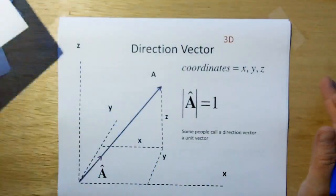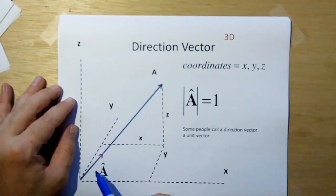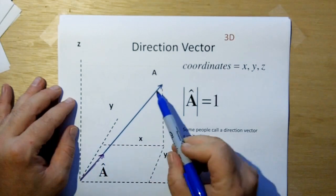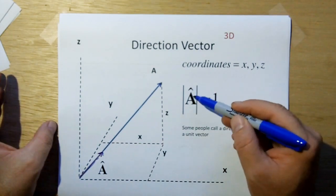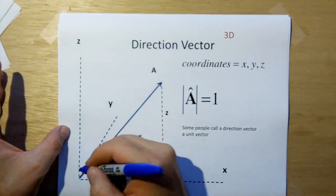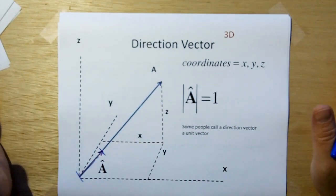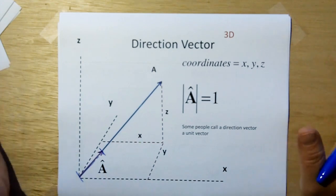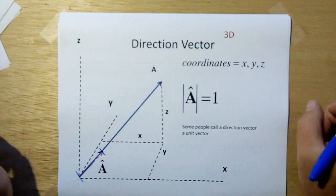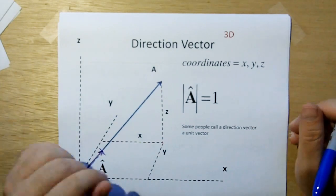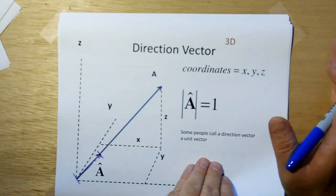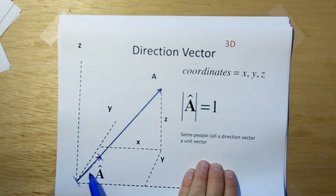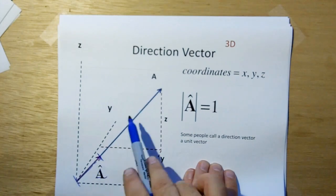Adding vectors in Cartesian coordinates is easy. Your direction vector is a unit vector of length one in the direction of A. Because it's a unit vector, if you take the magnitude of the direction vector, you're going to get the value one — the length of a direction vector is always one. Some people like to call direction vectors unit vectors, or even unit direction vectors. All those terms are valid — they're all the same thing: a vector of length one in the direction of your vector.